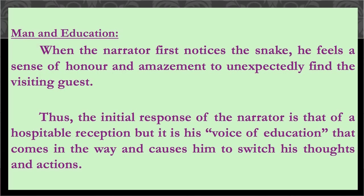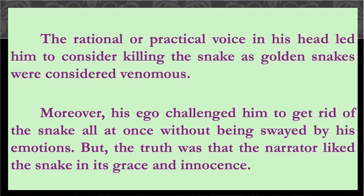The next theme evident in the poem is man and education. When the narrator first notices the snake, he feels a sense of honor and amazement to unexpectedly find this visiting guest. Thus, the initial response of the narrator is that of a hospitable reception, but it is his 'voice of education' that comes in the way and causes him to switch his thoughts and actions. The rational or practical voice in his head led him to consider killing the snake, as golden snakes were considered venomous. Moreover, his ego challenged him to get rid of the snake at once without being swayed by his emotions.